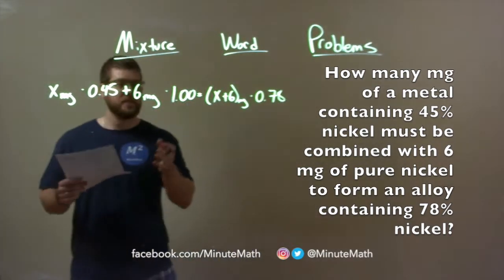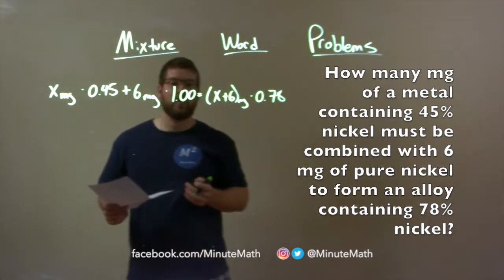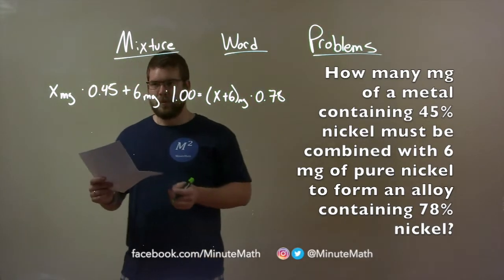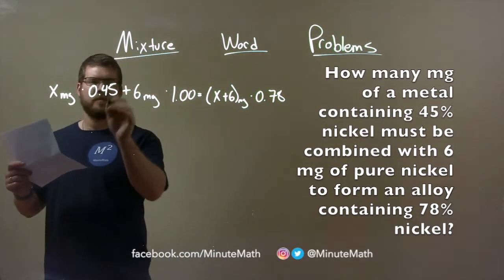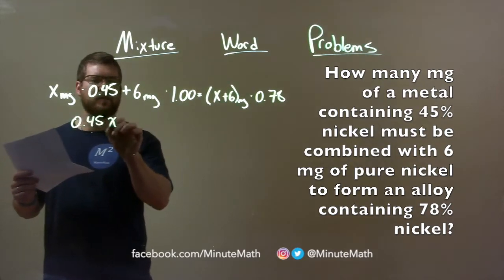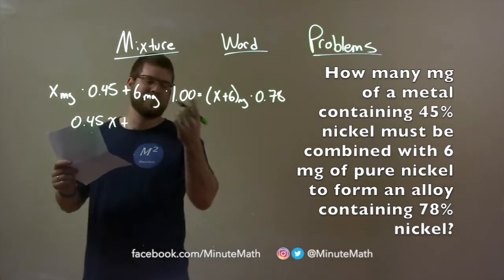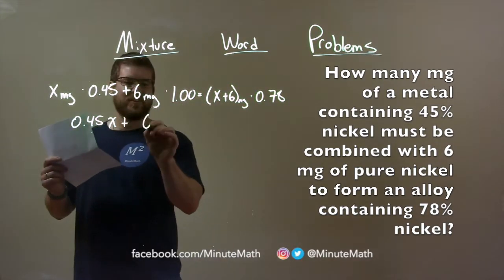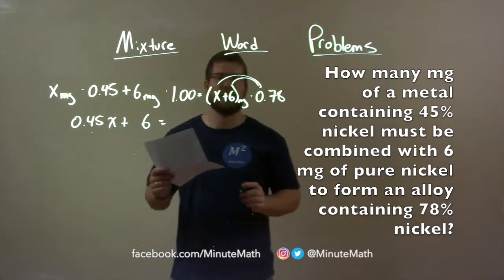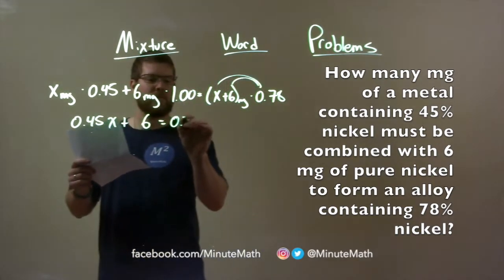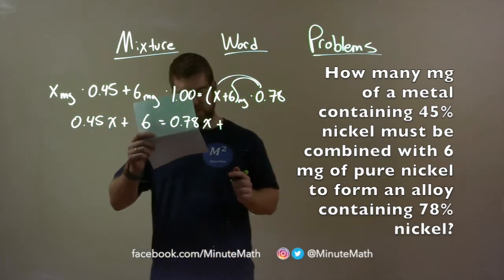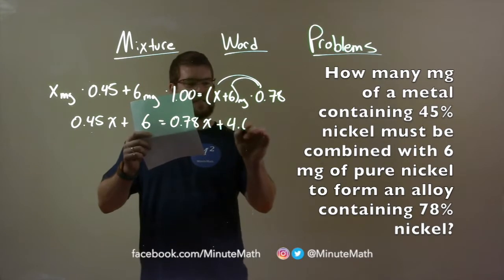Now we just need to take this equation and solve for X to get our initial milligrams of metal. Let's simplify this. Let's write it as 0.45X plus 6 milligrams times 1 is 6, equals, now let's distribute 0.78 to both parts. So it's 0.78X plus 6 times 0.78, which comes out to be 4.68.